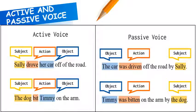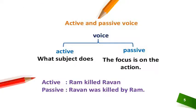Here you can see in the picture some major and proper differences between active and passive. In active voice: subject plus action word and then object. But in the passive voice, the object comes first, the action word is also changed into the third form of the verb, and then the subject goes last. In active voice the focus is on what the subject does, but in passive the focus is on the action.